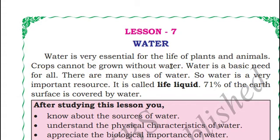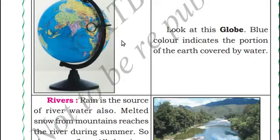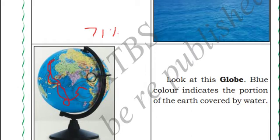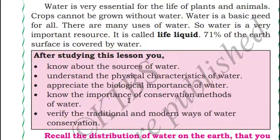Almost 71% of the Earth's surface is covered with water. When we see a globe, you can see that most of the part is covered with water. After studying this lesson, we will come to know about the sources of water and understand the physical characteristics of water.